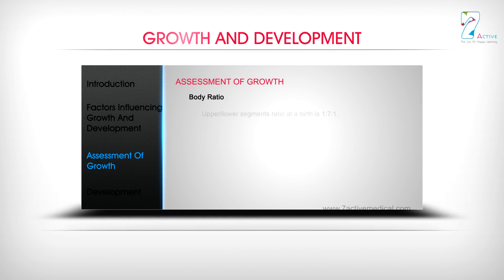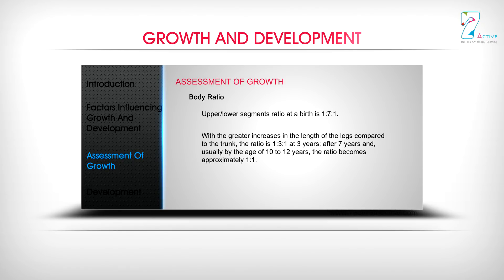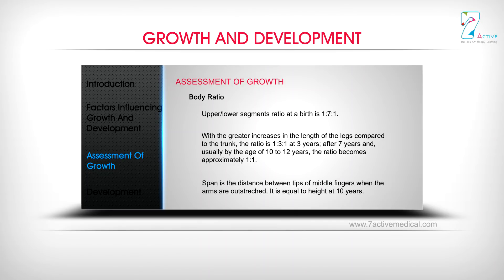Body Ratio: Upper to lower segment ratio at birth is 1.7 to 1. With the greater increase in the length of the legs compared to the trunk, the ratio is 1.3 to 1 at 3 years. After 7 years, usually by the age of 10 to 12 years, the ratio becomes approximately 1 to 1. Span is the distance between the tips of the middle fingers when the arms are outstretched, and it is equal to height at 10 years.